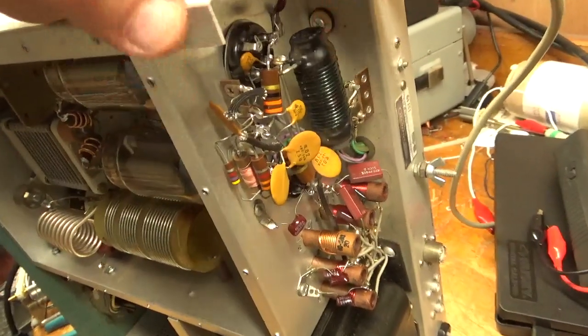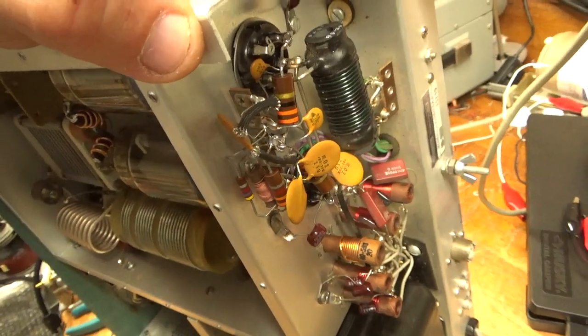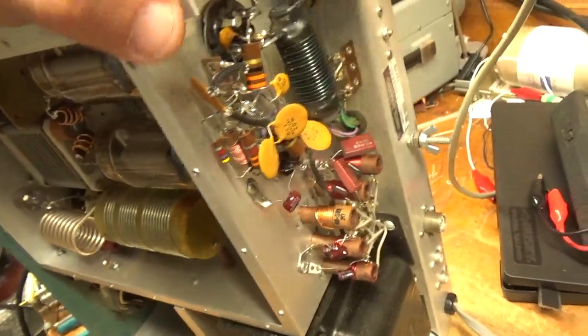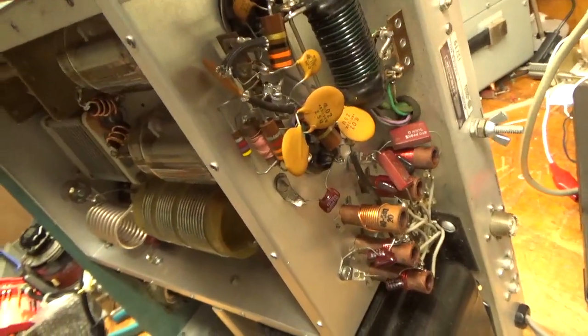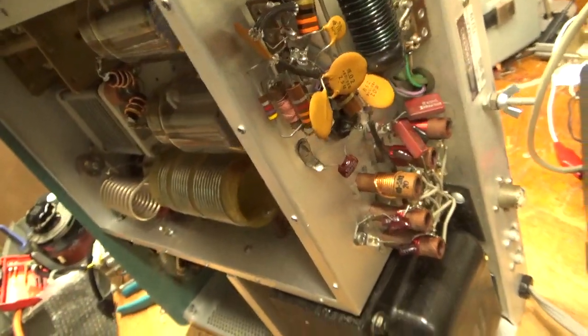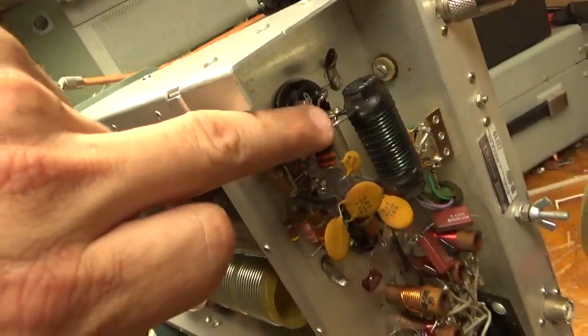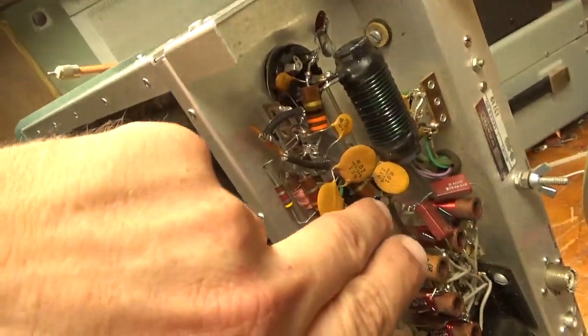Changed the grid loading resistors, brand new 2 watt Allen Bradley 33 ohm carbon comp type, one per tube, changed the mica cap, the 200 puff between the grid connection and ground, one here, one here, there's the grid loading resistor on this side, grid loading resistor on that side.